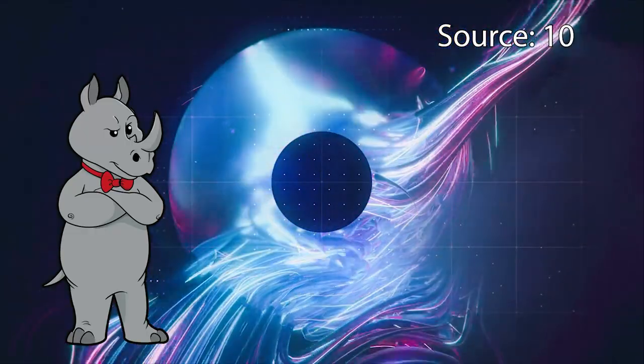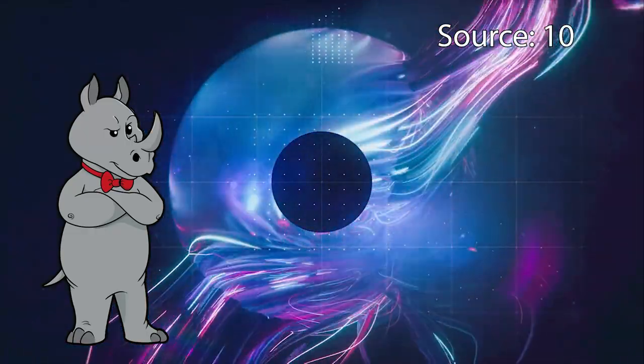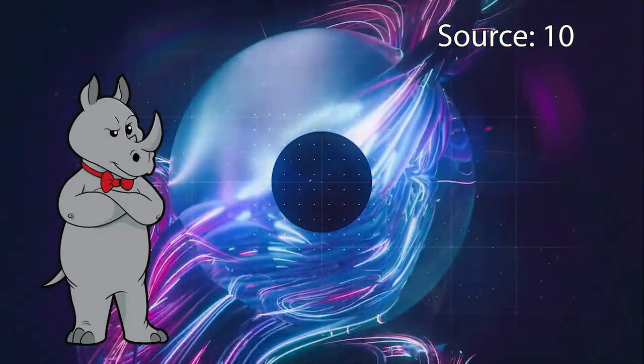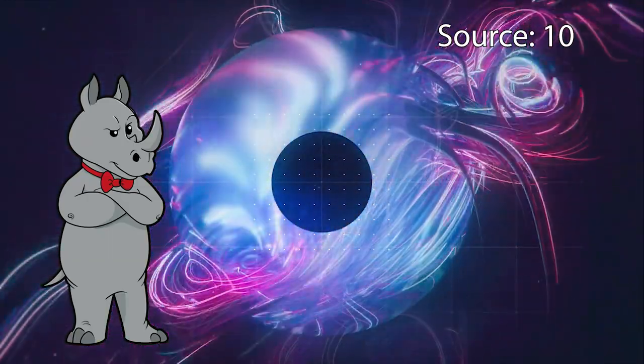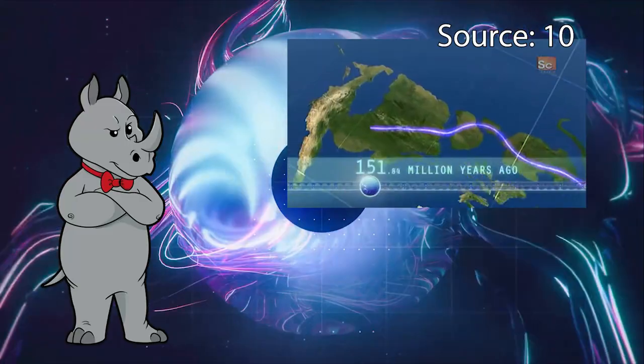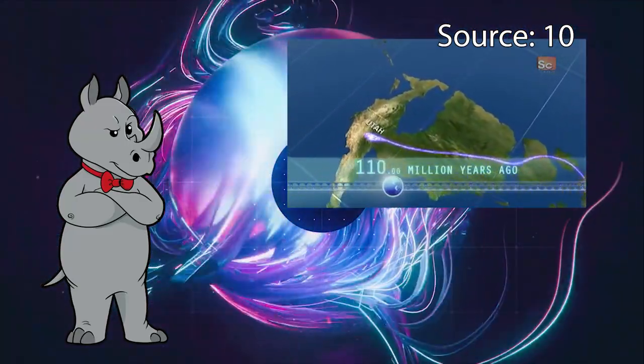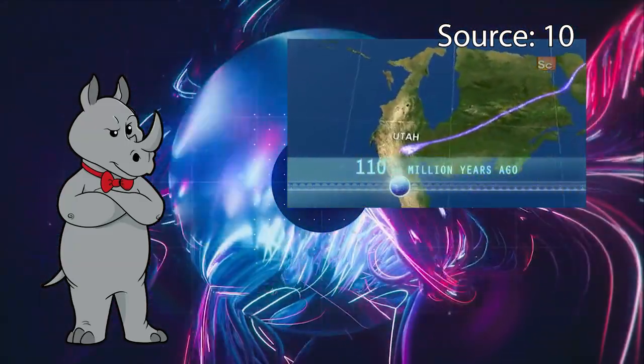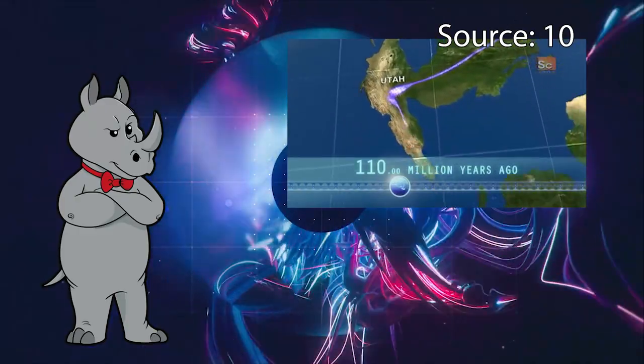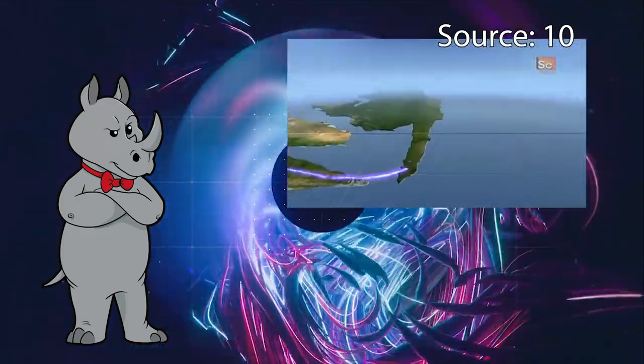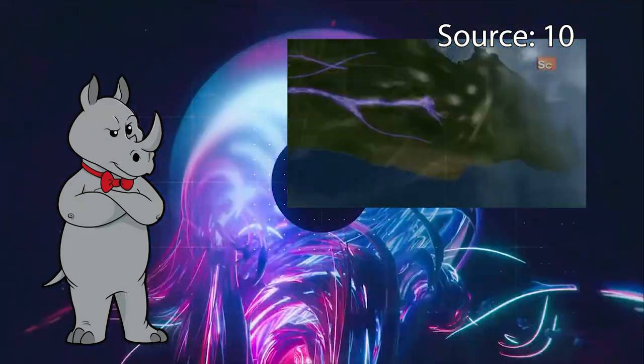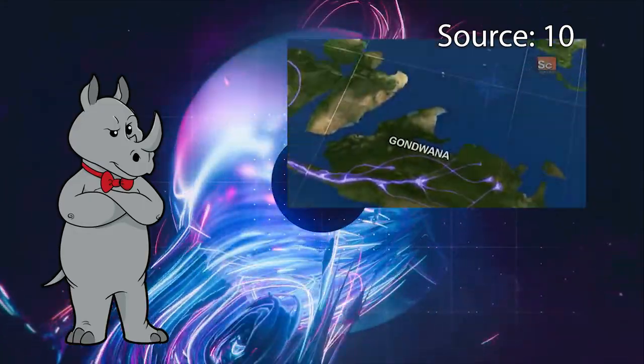Through fossil evidence, we have been able to determine, with reasonable amounts of certainty, that marsupials first evolved in what would eventually become Asia, they spread through Pangaea to areas that would become North and South America, and eventually made their way around to the area that we know today as Australia. As the continents separated, the marsupials that lived in Asia, Europe, and North America went extinct, leaving only the ones in South America and Australia.